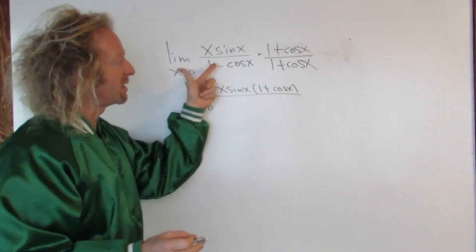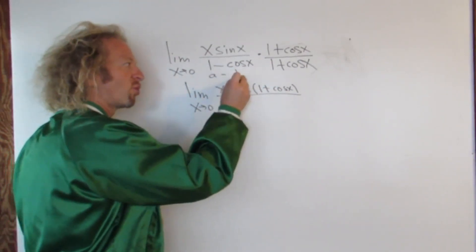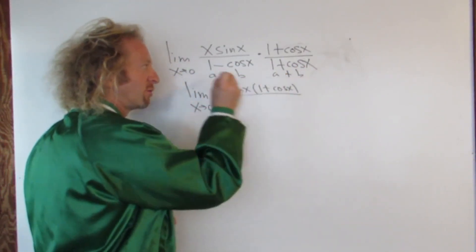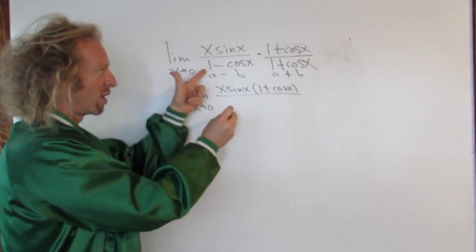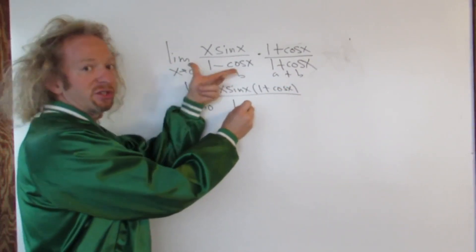On the bottom we have 1 minus cosine x times 1 plus cosine x. So that's a minus b, a plus b. That's the difference of squares formula. So this will be a squared minus b squared. So 1 squared is 1 minus cosine squared.